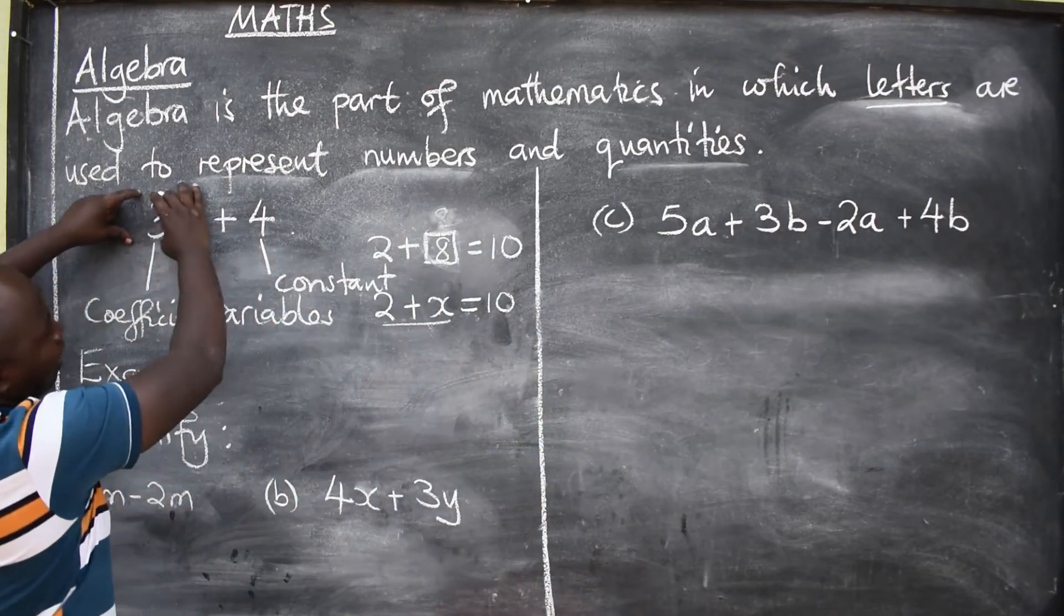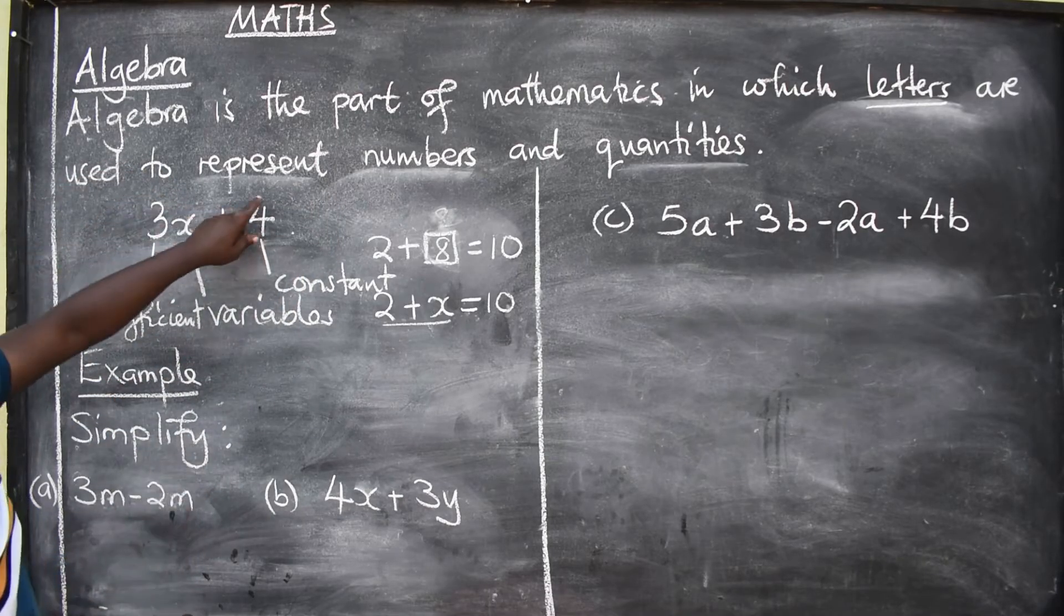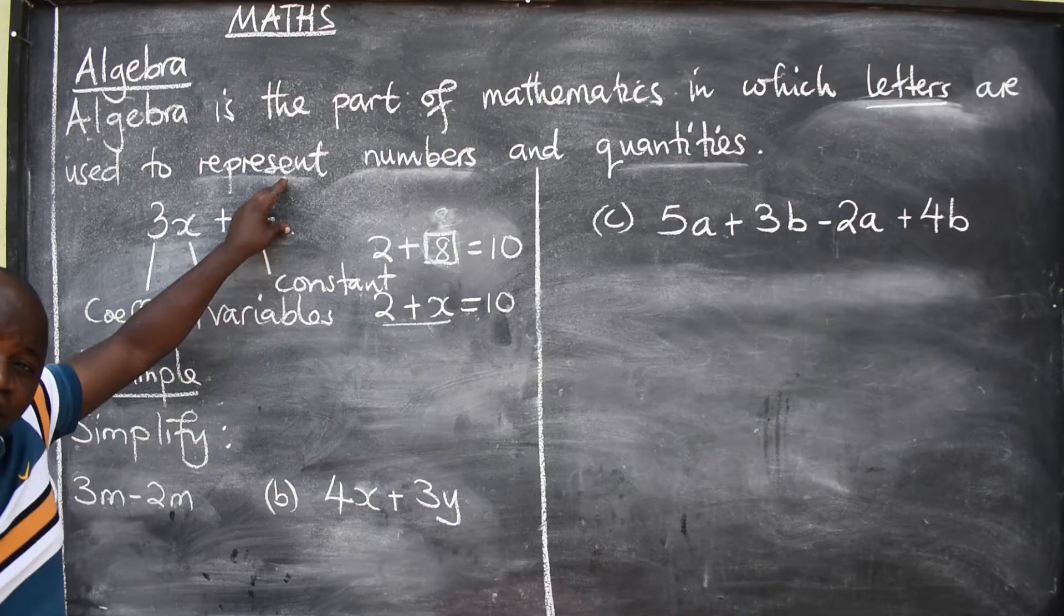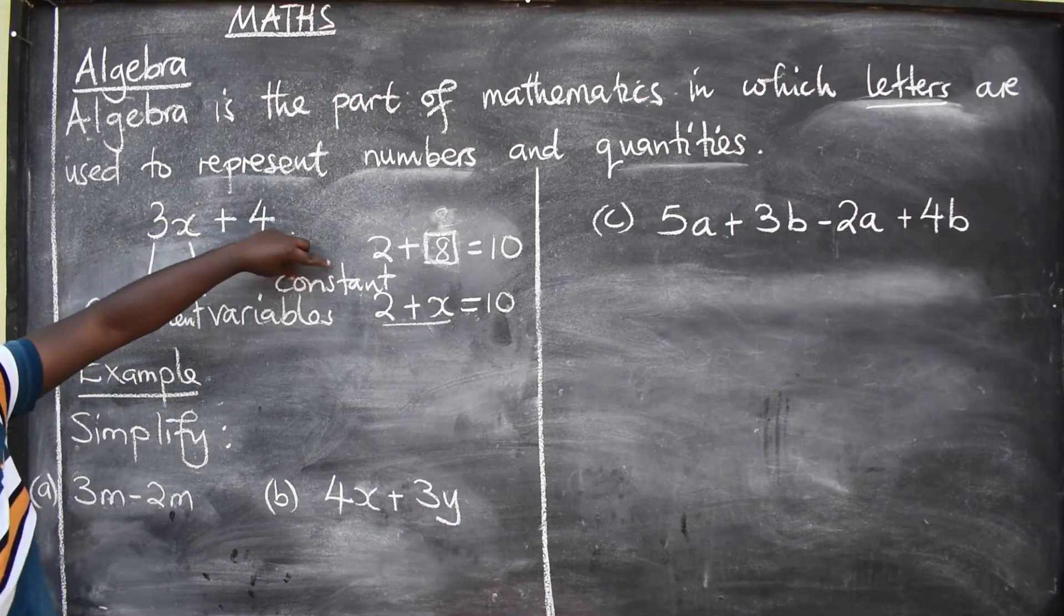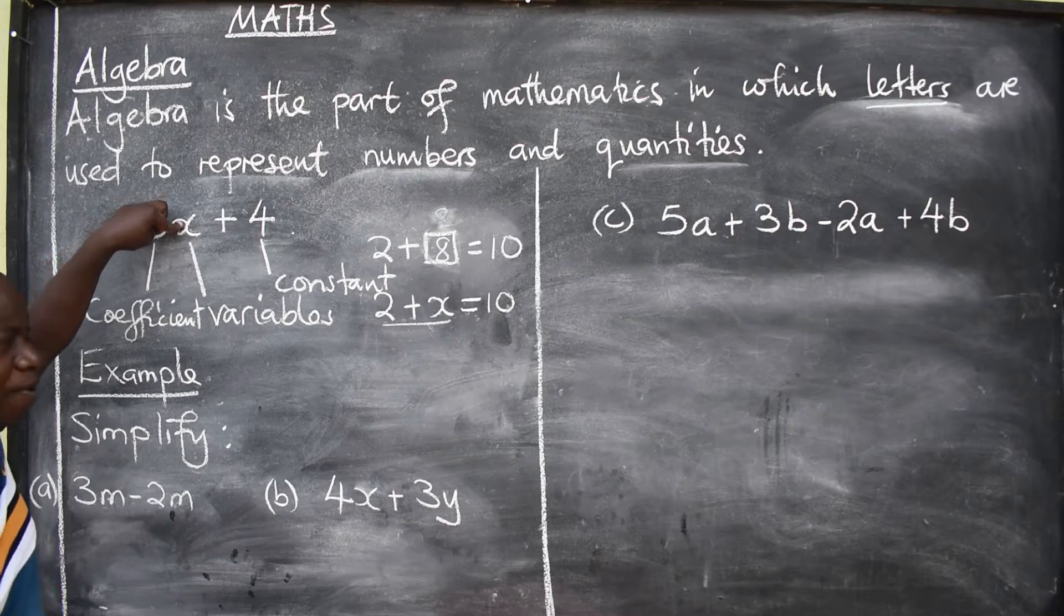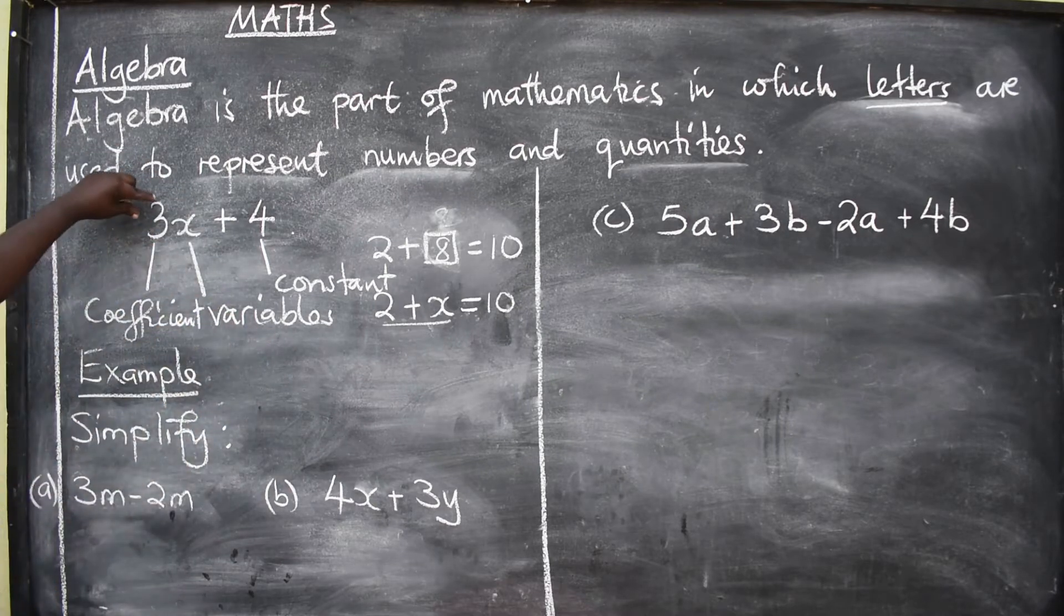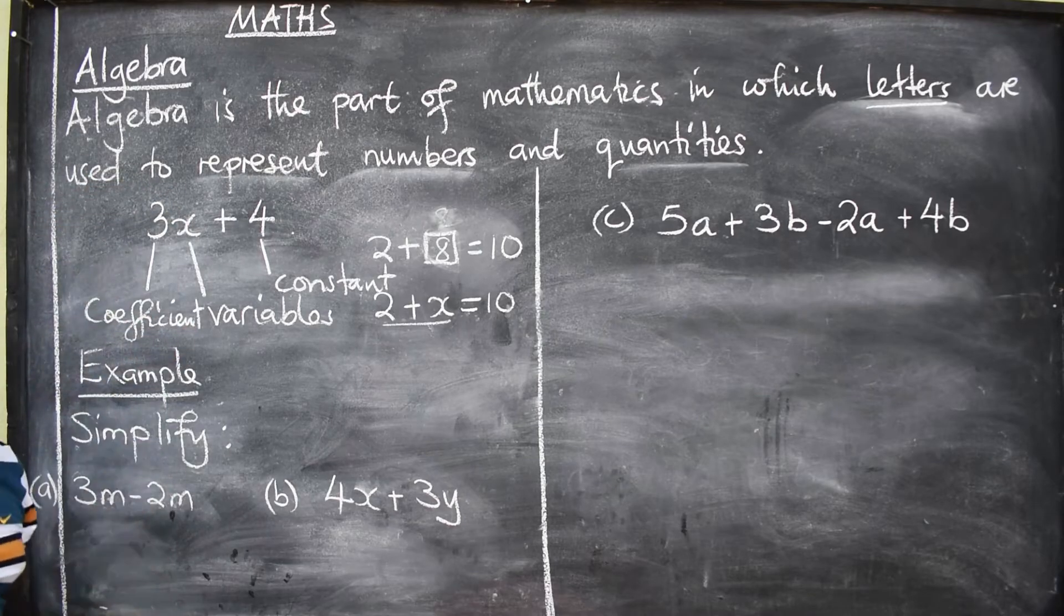So this is an algebraic expression. These are terms. This is a term, this is a term. So here, we have got two terms. The 4 here stands for constant since it doesn't have the letter or variable. This letter will be called variables. Then, the number in front of a variable is the coefficient.